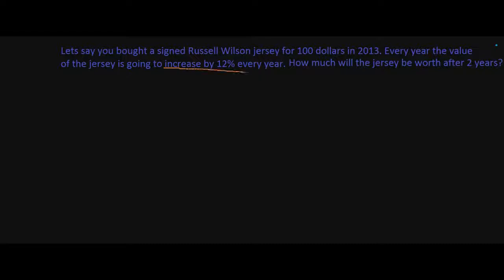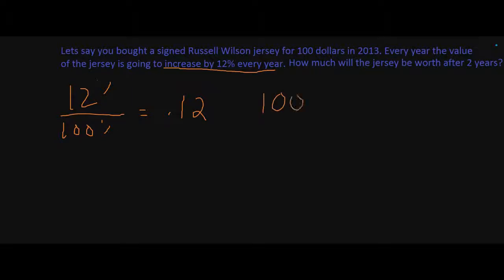We know that it's increasing by 12% every year, so we have 12%. Let's turn that to a decimal: 12% divided by 100% is 0.12. Now we want to find out how much the jersey is going to be worth after the first year. We're going to get 100 times 0.12, and we get $12.